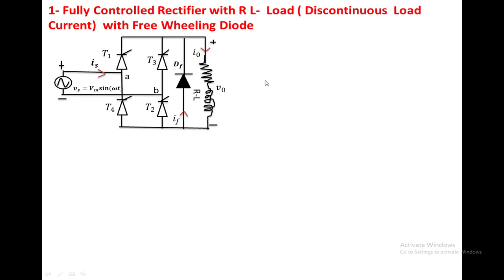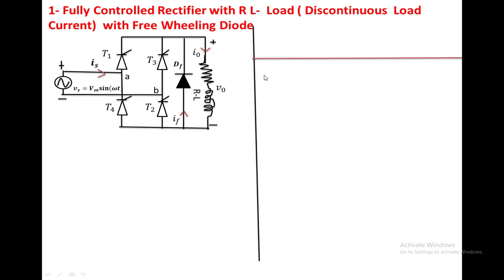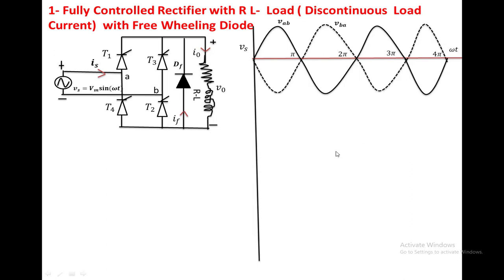To explain the circuit operation, we have taken the VAB voltage and VBA voltage on the waveform. The x-axis represents angle, with markers at pi, 2pi, 3pi, and 4pi. VBA is shown with a dotted line. At alpha and 2pi plus alpha, the triggering voltage is applied to T1 and T2. At pi plus alpha and 3pi plus alpha, the triggering voltage is applied to T3 and T4.